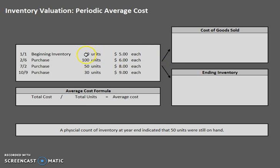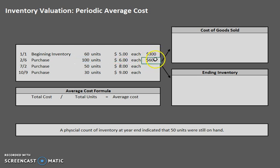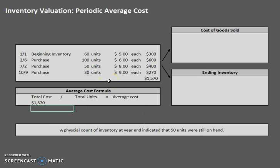In order to do this we have to take each layer and multiply across and add them up. So the total cost for the first layer is going to be 60 units times $5 each, and for the second layer that would be 100 units at $6 each. We're finding the total cost for each individual layer, and to find the total for all four layers we simply add those up. Our total cost is $1,570.